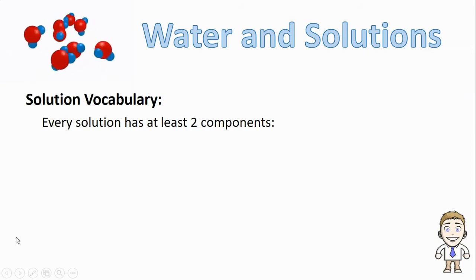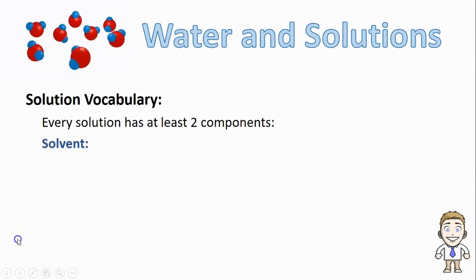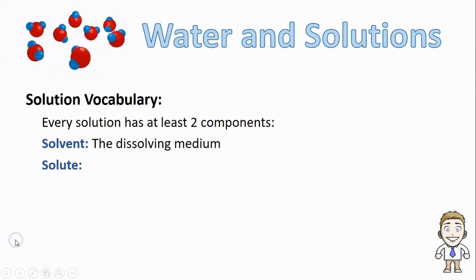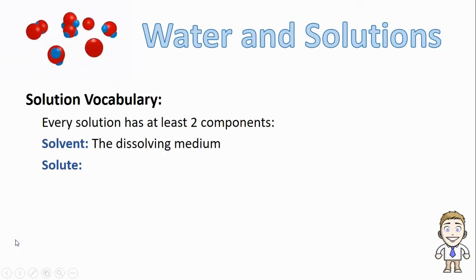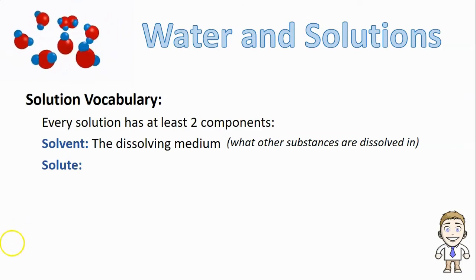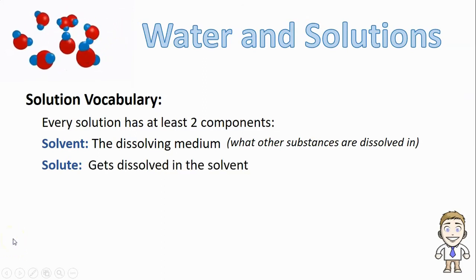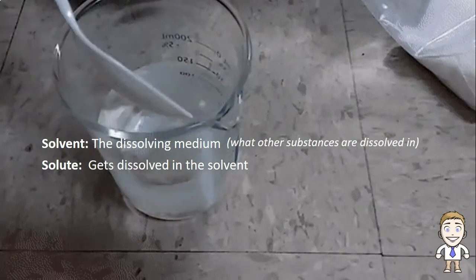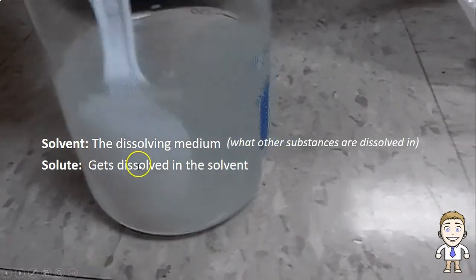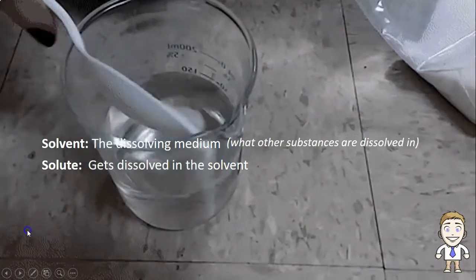Before we take a look at this process, there is some vocabulary we have to go over first. Every solution has at least two components: the solvent and the solute. The solvent is officially described as the dissolving medium — what that really means is the solvent is what other substances are dissolved in. The solute is what gets dissolved in the solvent. If we apply those two definitions to a clip of some salt being added to water, since the salt is getting dissolved in the water, that makes the salt the solute and the water the solvent.